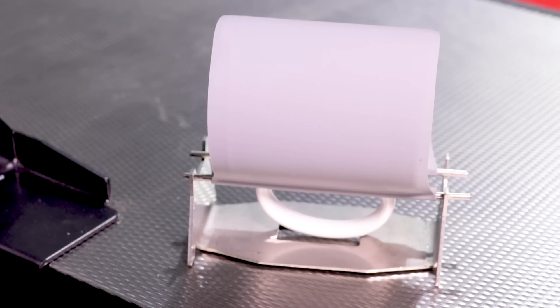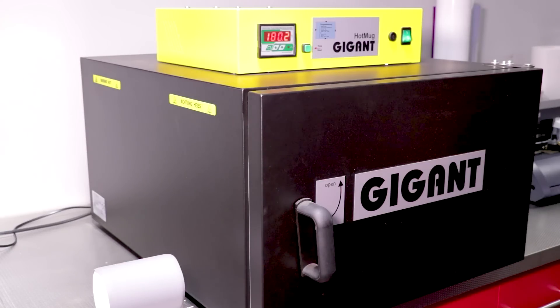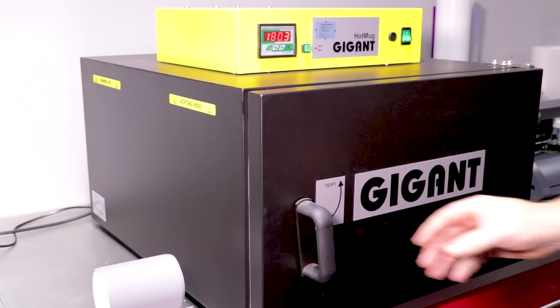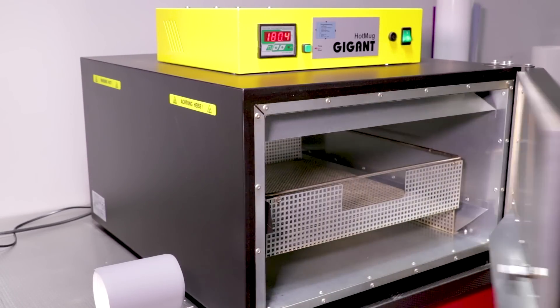And there it is, ready to rock and roll. Now the second part to the GJS bulk mug system is the gigantic hot mug oven. It's an oven that can be used for multiple mugs at once, but today we're just going to do one mug.